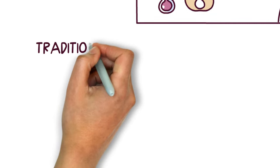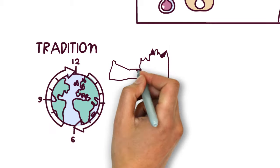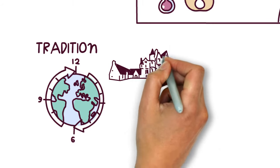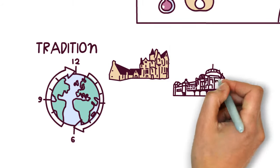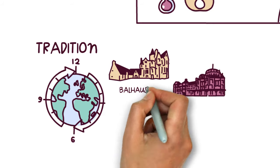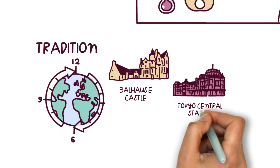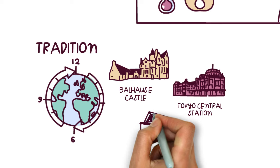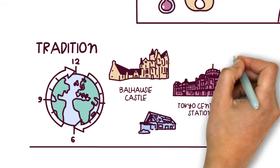Tradition. Slate has passed the test of time. Its natural properties make it the ideal material for any type of project. It has been used in monuments such as the Balhousie Castle or the Tokyo Central Station, and it's also perfect for your house.